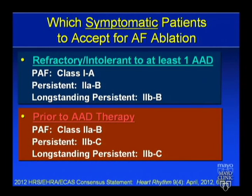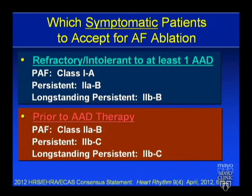The current indications are symptomatic atrial fibrillation — we don't have an indication for asymptomatic AF for ablation. Patients refractory or intolerant to at least one antiarrhythmic drug carry a class 1A indication for PAF. For persistent and longstanding, it's 2B. For patients who have never seen an antiarrhythmic drug, PAF has a 2AB indication, while persistent and longstanding are 2BC.